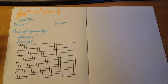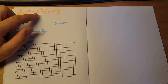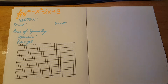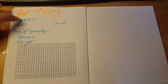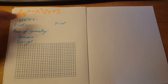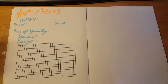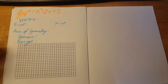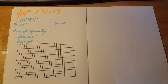We have a quadratic function and we're going to do a lot of work on it. We're going to find the vertex, x-intercept, y-intercept, axis of symmetry, domain, range, and we're also going to graph it. Let's get started.